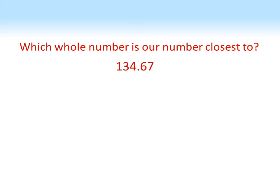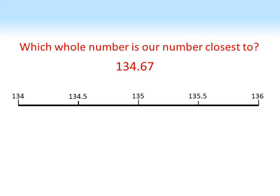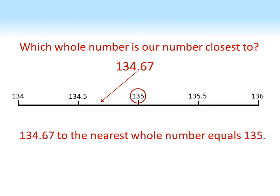Let's look at a slightly trickier example. Here's 134.67 — we want to round that to the nearest whole number. Here's a number line: 134.67 is bigger than 134.5, it's going to be roughly there, so we can see that the whole number it is closest to is 135, so that's what we round it to.